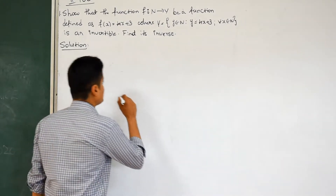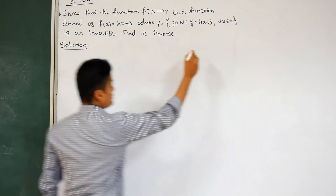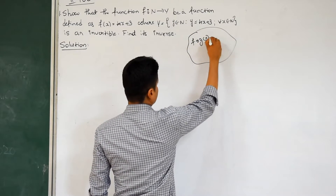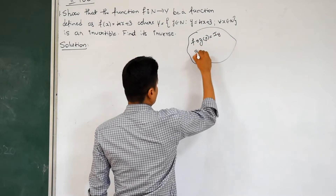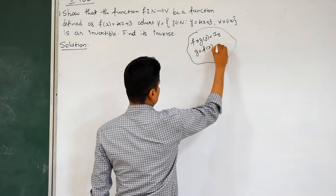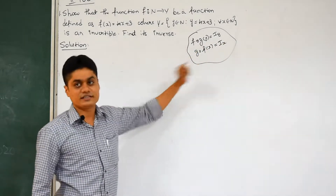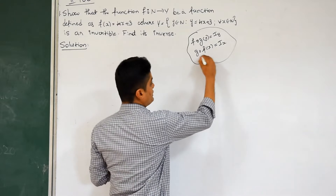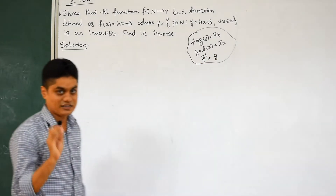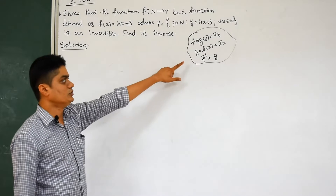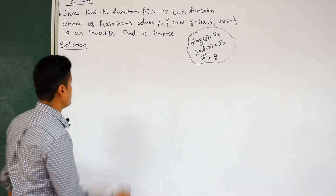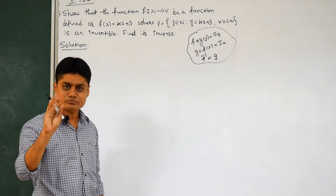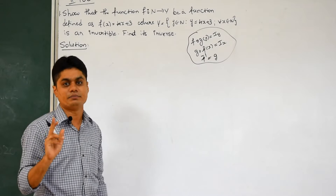A function is called an invertible function if f(g(y)) equals the identity of y, and g(f(x)) equals the identity of x. If these two conditions are satisfied, the function is invertible and the inverse of f is g. This is an important problem asked two or three times in the final exam for five marks.